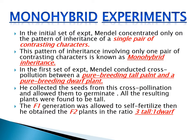He crossed the pure breeding tall and dwarf plants, collected the seeds from this cross-pollination, and allowed them to germinate. All the resulting plants in the F1 generation were found to be tall. The F1 generation was then allowed to self-fertilize, producing F2 plants in the ratio 3 is to 1 — meaning 3 tall and 1 dwarf.